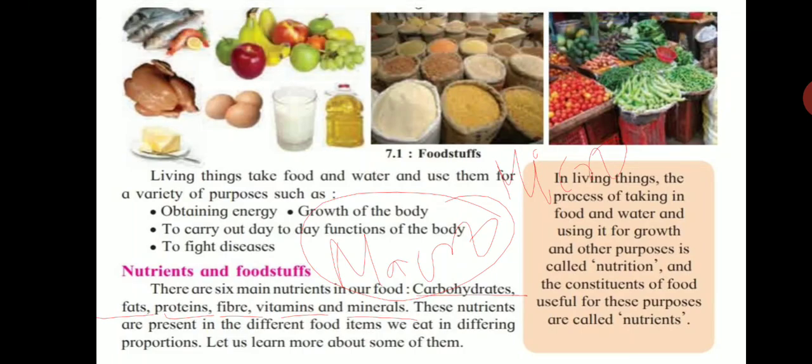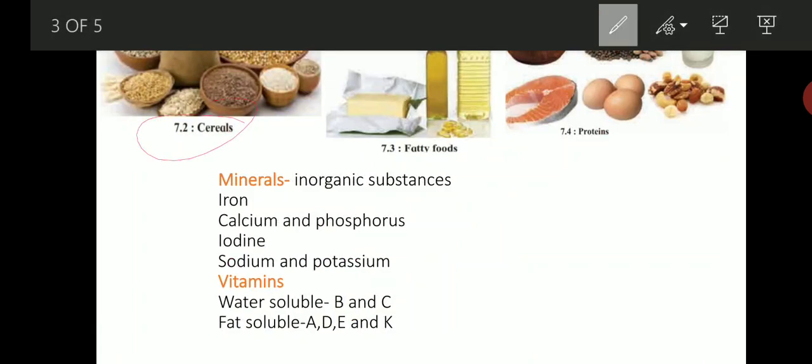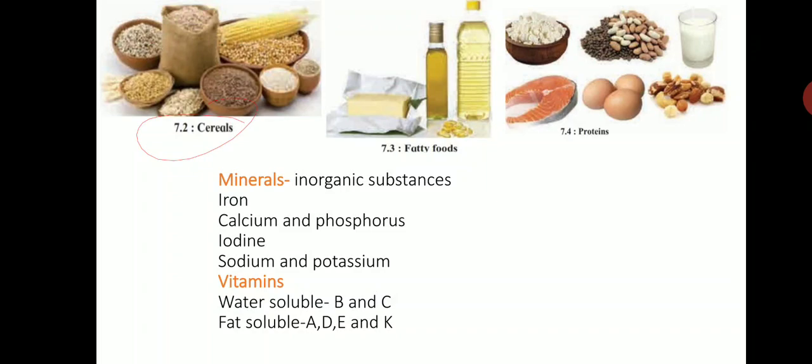Let us start with the first nutrient: carbohydrates. Carbohydrates are the energy-giving nutrients, and our main need is for energy, which carbohydrates fulfill. Cereals are the sources of carbohydrates. In our diet, cereals are present in large proportion in the form of rice, chapati, roti, bhakri, and bread — all of which contain carbohydrates.